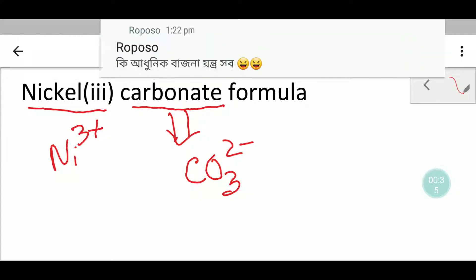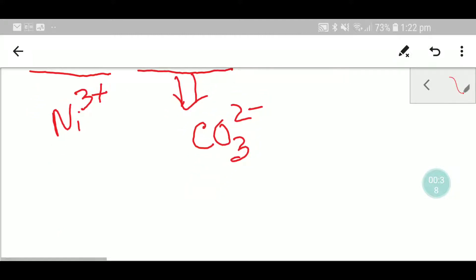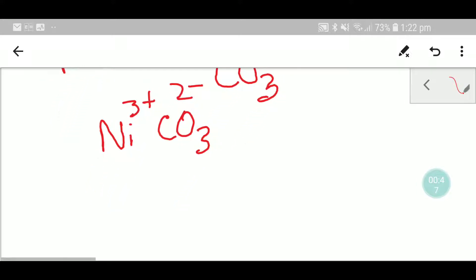So we have two ions. Let me write these two ions side by side so that we can easily write the formula for nickel carbonate.